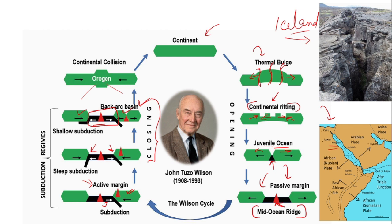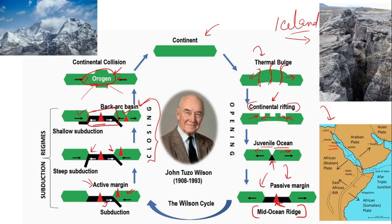The two continental blocks that were once separated through rifting come to join each other again. Since they are both lighter, they have no choice but to rise together, giving rise to orogenic phases — as seen in the case of the Himalayas. This uplift goes up to a certain limit, after which erosion takes place, and once efficient enough, the land is eroded back to sea level.